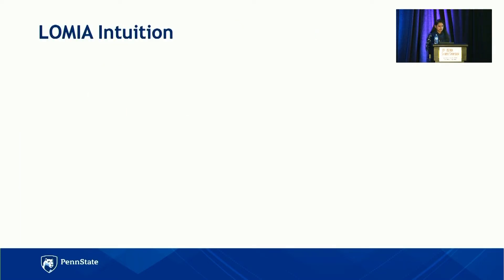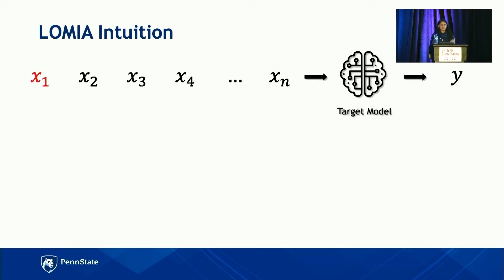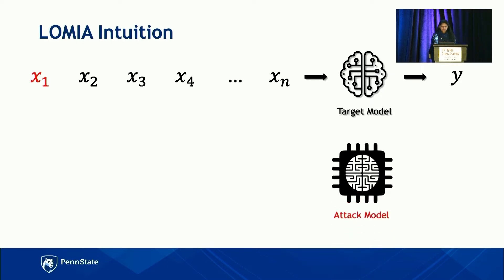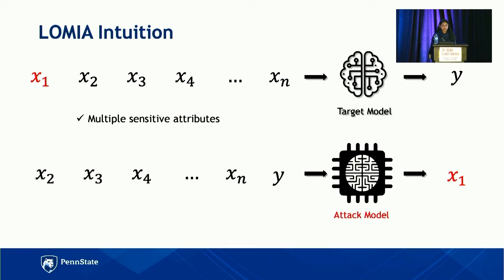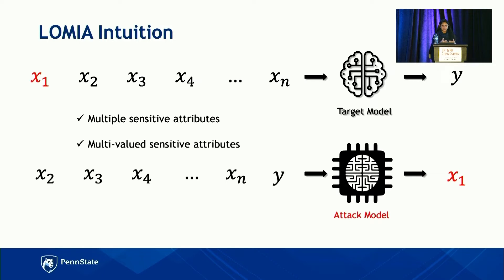Let me give a quick intuition of how this attack works. This is the target model — X1 through Xn are the input attributes, and Y is the output attribute. Without loss of generality, we assume X1 is the sensitive attribute the adversary is interested in reconstructing. In our attack, we train an attack model which takes as input the non-sensitive attributes X2 through Xn and Y, and tries to predict the sensitive attribute value X1. In the paper, we consider multiple sensitive attributes — X1, X2, X3 could all be sensitive. We also take instances where sensitive attributes could be multi-valued, not only binary. So far, existing attacks have only looked at one sensitive attribute and only binary ones — we wanted to see how our attack expands to these scenarios as well.